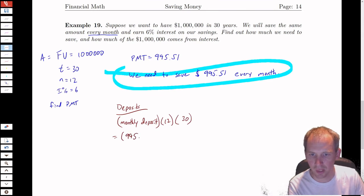So we're going to take $995.51, and multiply that by 12, and multiply that by 30.